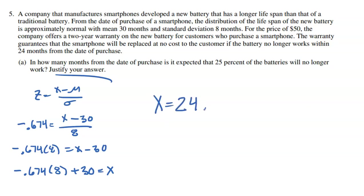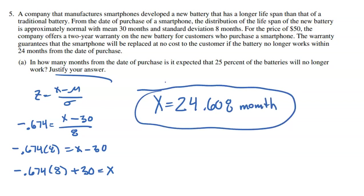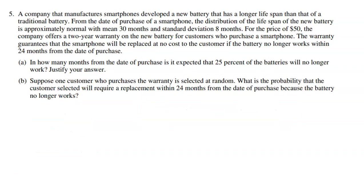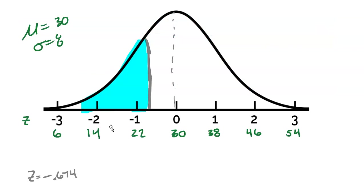So if a battery lasts 24.608 months — a little bit more than 24 months — then anything below that is going to be in the bottom 25% of batteries that will no longer work. Part B: suppose one customer who purchases the warranty is selected at random. What is the probability that the customer will require a replacement within 24 months because the battery no longer works? The warranty starts at 24 months, which falls around the 22-month mark on our curve, somewhere around there.